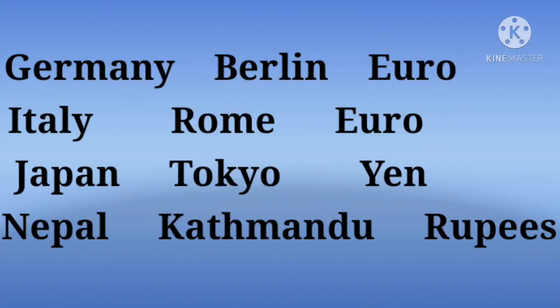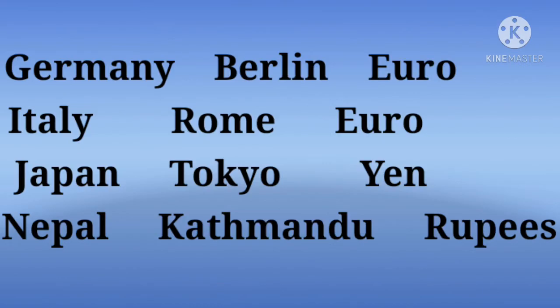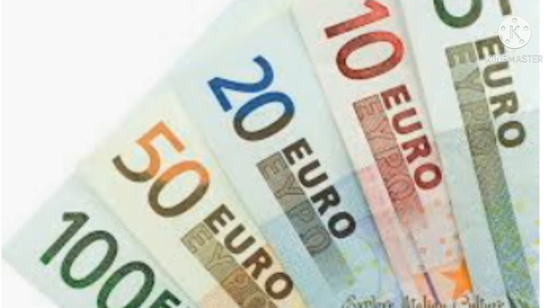Next country is Germany. Its capital is Berlin and currency is Euro. Here is a picture of Euro. Next country is Italy. Its capital is Rome and currency is Euro. Have a look at the picture of Euro — it is Italian Euro.